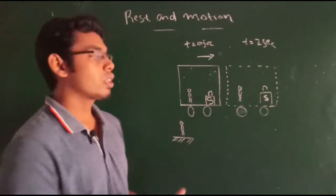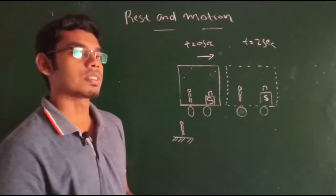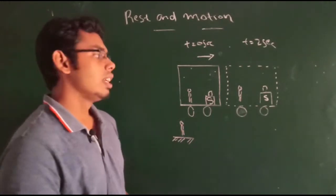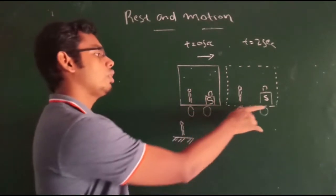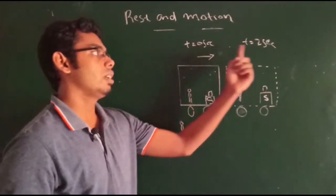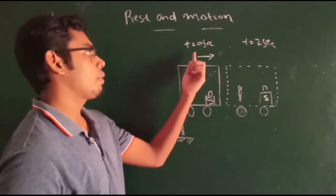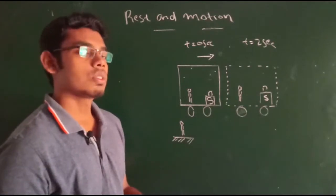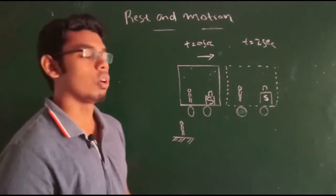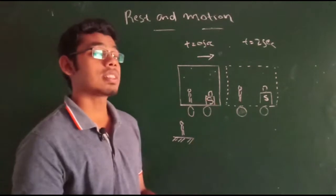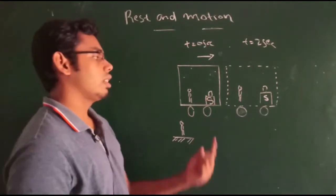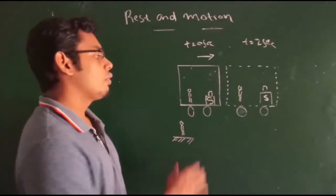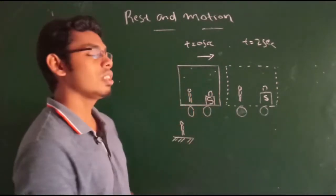Now we are going to analyze this situation with respect to these two people. With respect to the person standing at the bus stop, he sees the suitcase at two different positions at two different time intervals. From zero to two seconds, he sees the suitcase at a different position. So, with respect to this person standing at the bus stop, the suitcase's position is changing, which means the suitcase is in the state of motion with respect to this person.